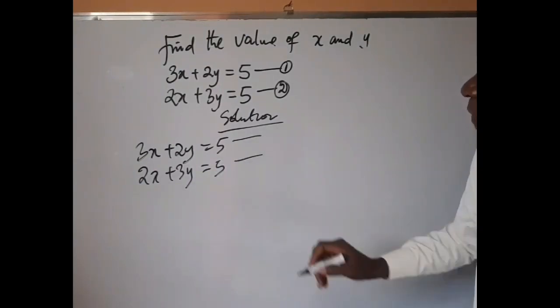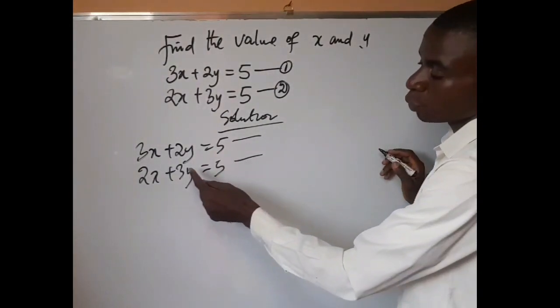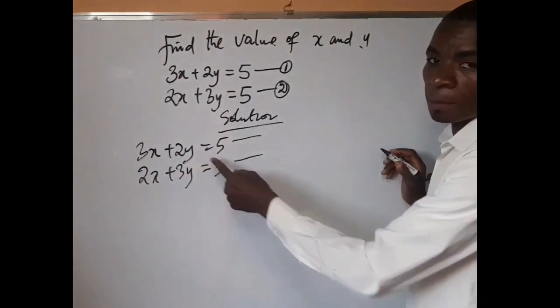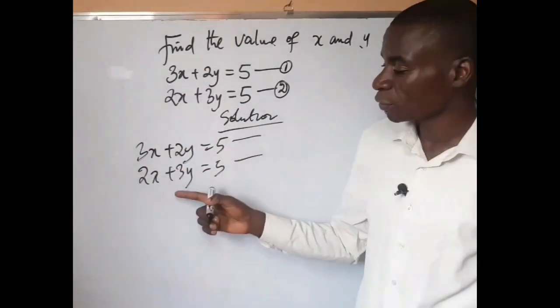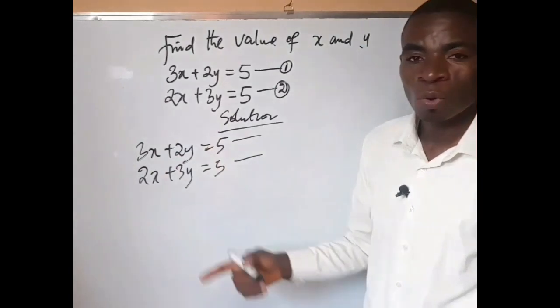Now we need to check a few things here. Looking at the first equation, we would like to eliminate either x or y, but the condition is like this: before eliminating any of the variables here, you must check that equation 1 and equation 2 must have the same coefficients.